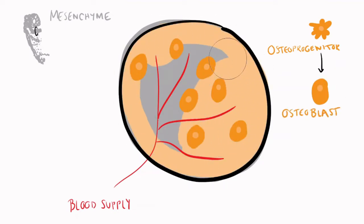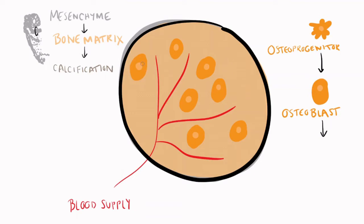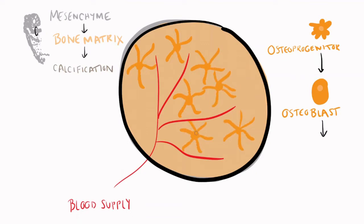Remember that osteoblasts build bone. They secrete the bone matrix and then initiate the process of calcification, where hydroxyapatite crystals form, hardening that matrix. Osteoblasts will get trapped in the calcified matrix, where they transition to become osteocytes. These osteocytes monitor change within the bone tissue.